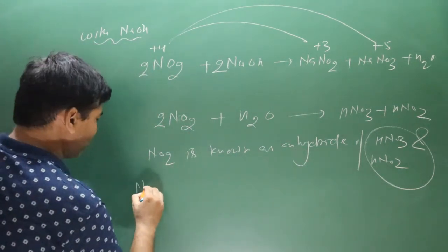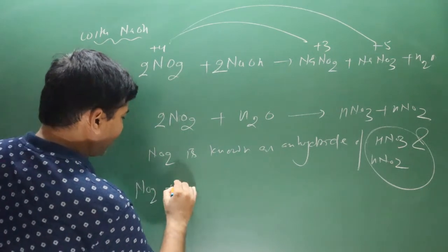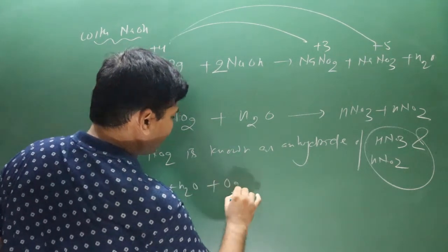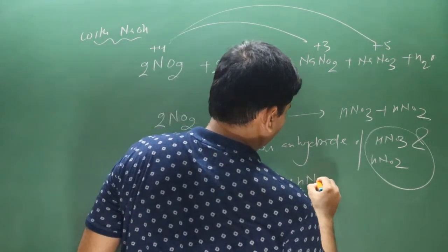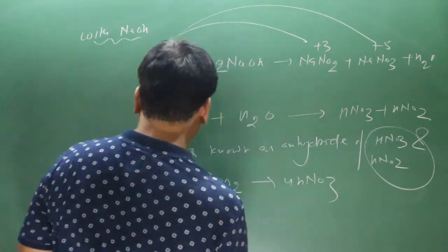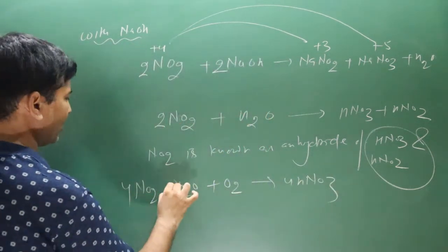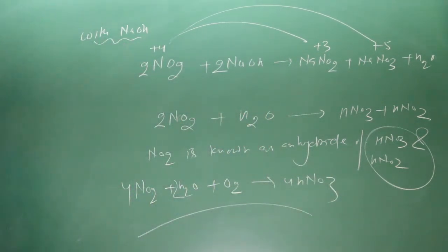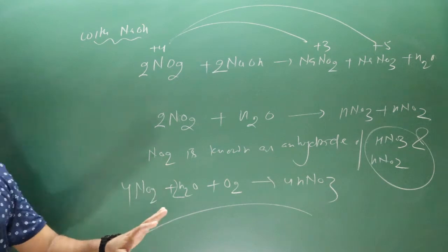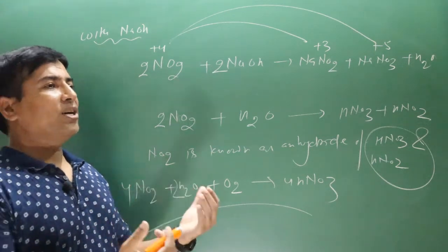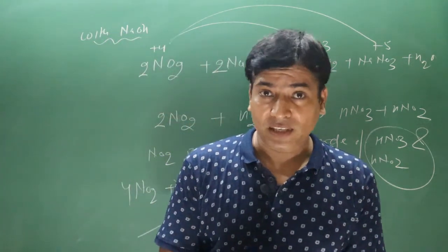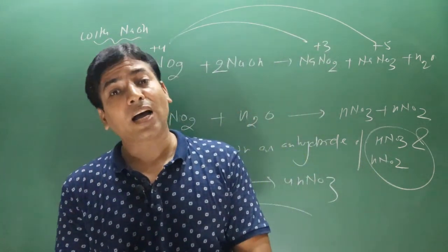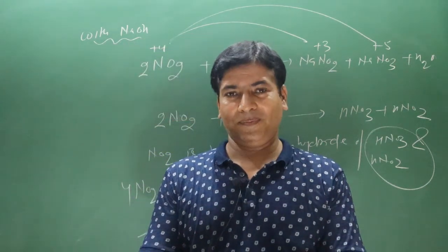If nitrogen dioxide is dissolved in water in the presence of oxygen (air), we get only nitric acid. So keep in mind: in the presence of air we get only nitric acid, while in the absence of air we get both nitric acid and nitrous acid.